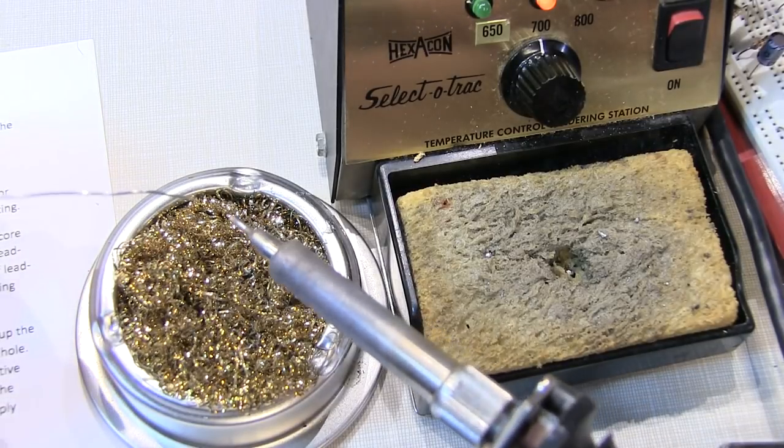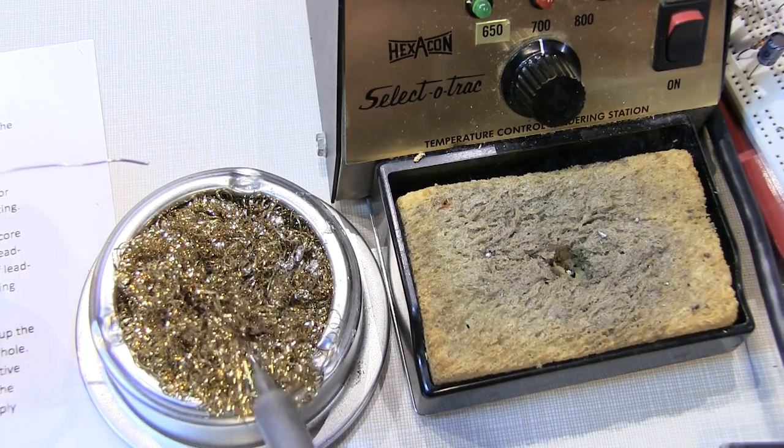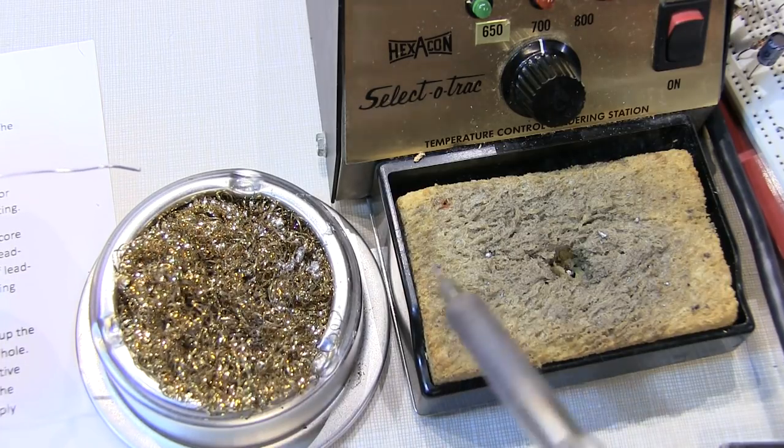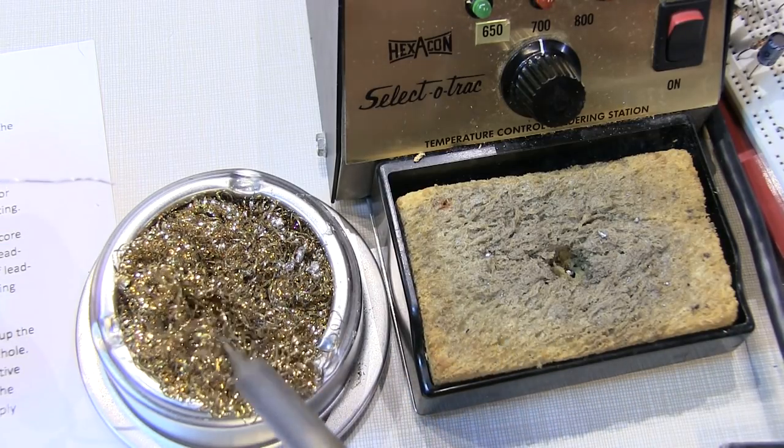Now periodically while you're soldering, it's a good idea to put a little solder on the tip of the iron, and then to wipe it off either on the solder tip cleaner or the wet sponge that is provided. This keeps the tip clean and ensures good solder connections.